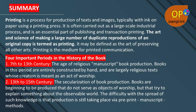7th to 13th century — the age of religious manuscript book production: books of this period are entirely constructed by hand and are largely religious texts whose creation was meant as an act of worship. 13th to 15th century — the secularization of book production: books begin to be produced that do not serve as objects of worship but try to explain something about the observable world. The difficulty with the spread of such knowledge is that production is still taking place via pre-print manuscript methods.